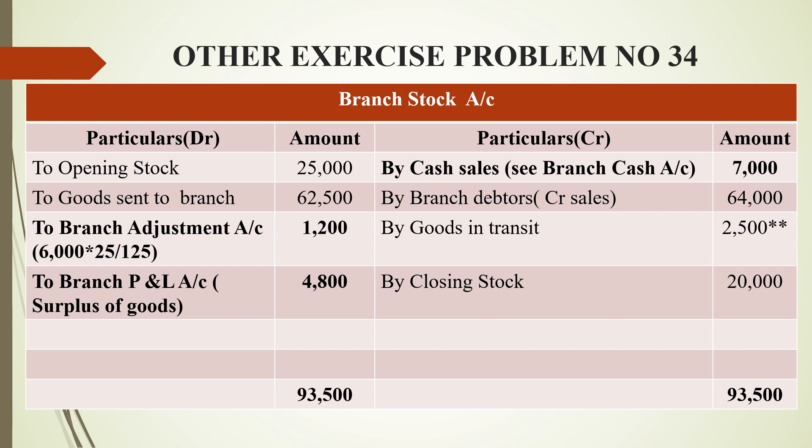On the credit side: cash sales 7,000 (branch cash account — this is the balancing figure). By branch debtors account: 64,000 (this is from the question). By goods in transit: 2,500, which we already have. By closing stock: 20,000, which is already in our hand. The closing stock is already in our possession, so it goes on the credit side.